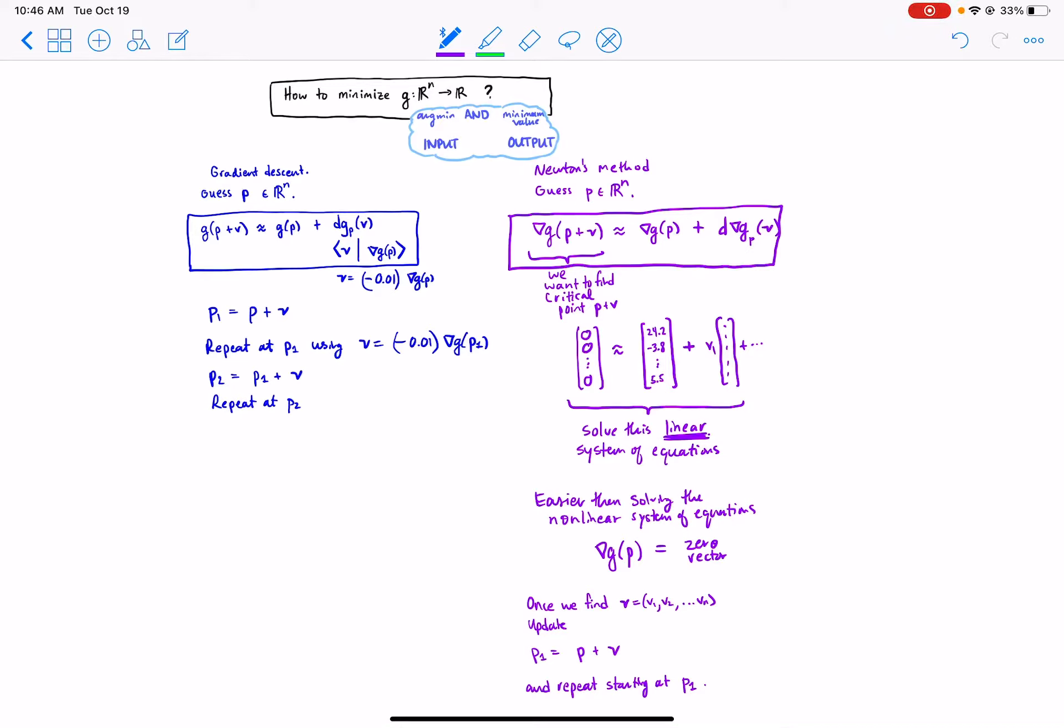Okay, hi everybody. We're going to look at gradient descent versus Newton's method in the context of how to minimize a given function. I have some function and I want to find the argument which is in the input space and the minimum value which is the output when I plug in the argument.